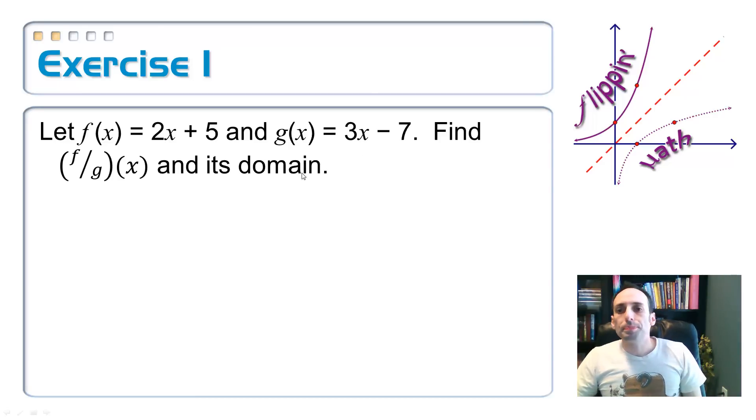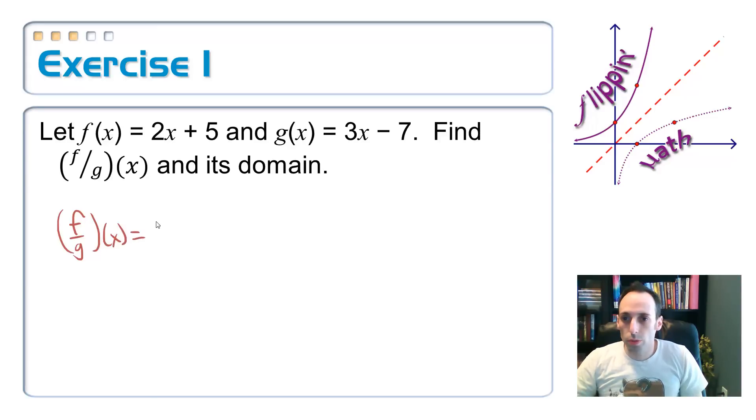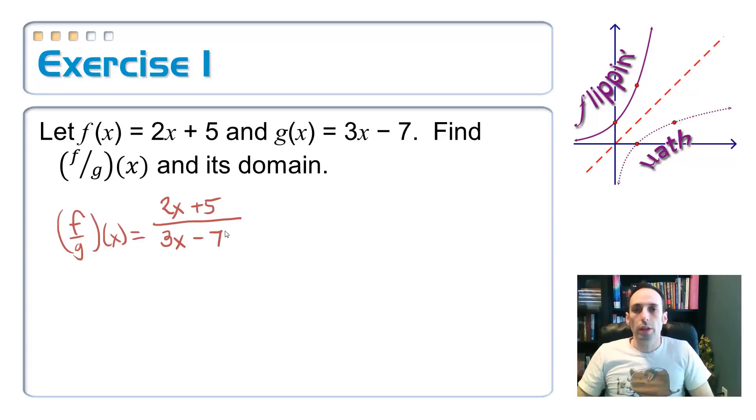So let f of x equal this function, 2x plus 5, and g of x equal this function, 3x minus 7, and find this thing that says f divided by g of x. This is a fancy way of saying that we're getting a new function by just dividing these two functions. So f divided by g of x is equal to, put the f function on top, 2x plus 5, and the g function on the bottom, 3x minus 7. We've seen something like this before.